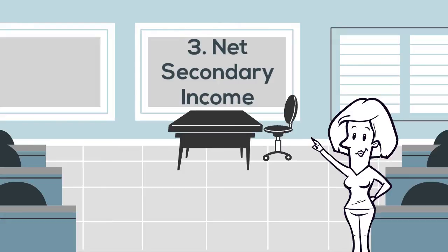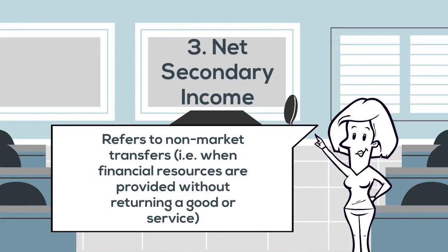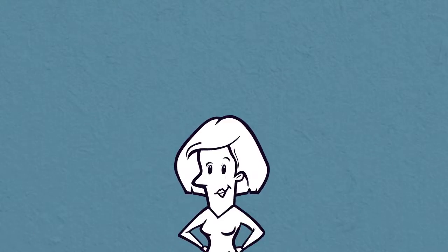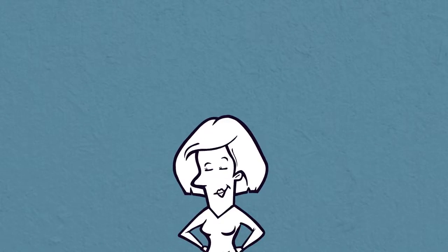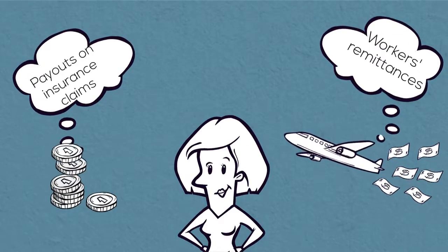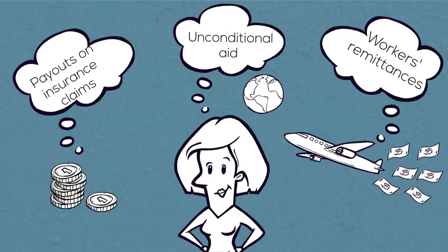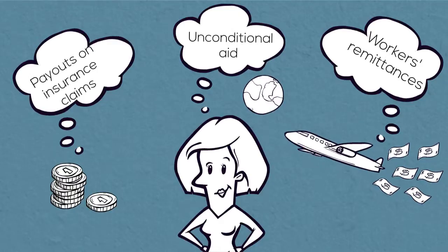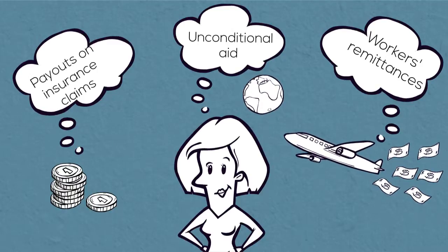The net secondary income account refers to non-market transfers — when financial resources are transferred between countries without providing a good or service in return. Three transactions you would usually find in this account are payouts on insurance claims, workers' remittances such as foreigners working in a country and sending money back overseas, or unconditional aid to developing nations. This aid is unconditional because funds are given as a gift and are not to be used for any specific purpose.